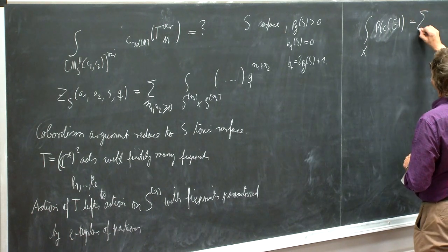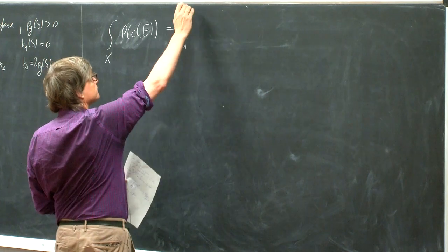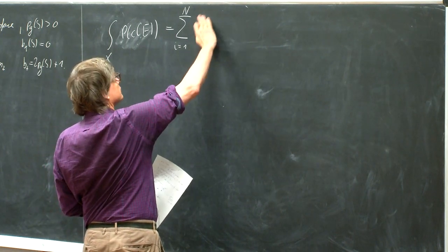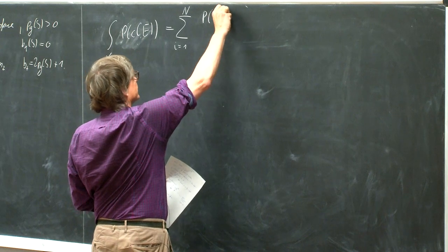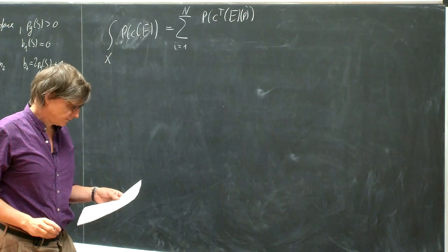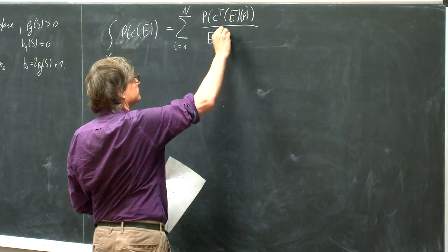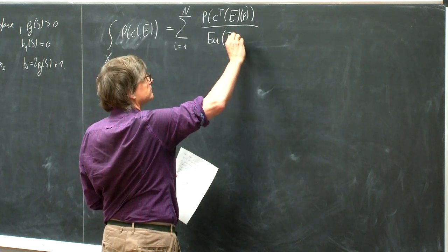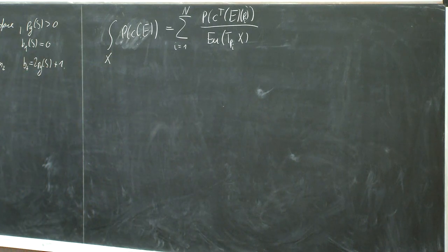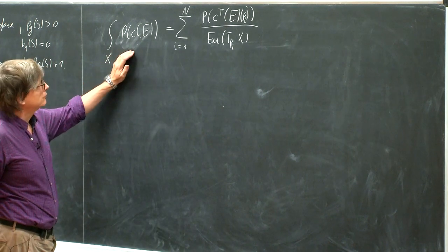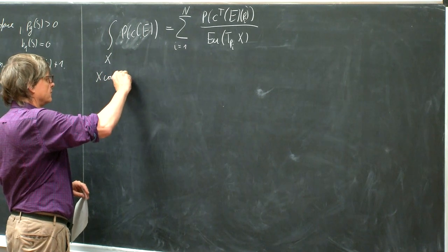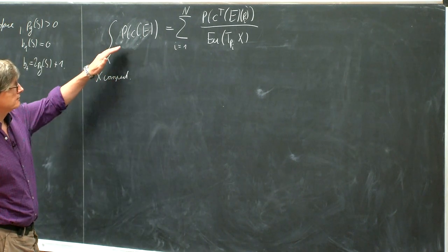Then this would be a sum over the fixed points p1 to pn, where n is the number of fixed points — the P of the equivariant Chern classes at p, which were defined in terms of the weight of the action, divided by the Euler class. And this is true if X is compact, then we can just get this number.